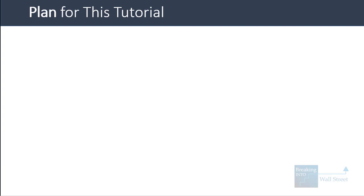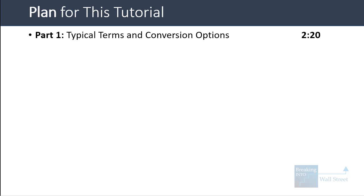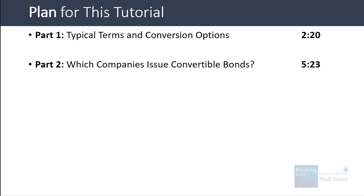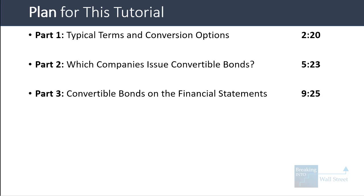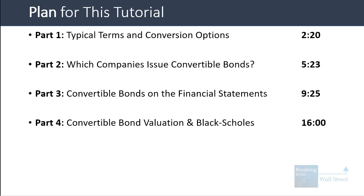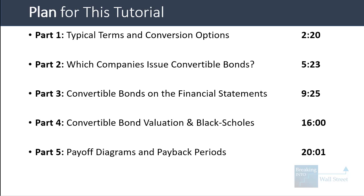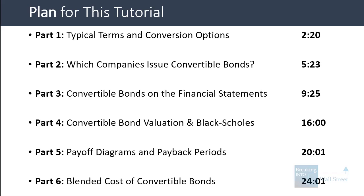Our plan for this lesson is as follows. I will list the timestamps for each of these on screen since this is a longer video. I'm going to start by telling you about the typical terms and conversion options associated with convertible bonds. Then we'll cover which types of companies issue convertible bonds most often, look at convertible bonds on the financial statements, go through valuation, look at payoff diagrams and payback periods, and conclude by looking at the blended cost of convertible bonds — typically in between the cost of debt and the cost of equity.